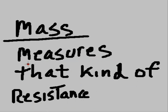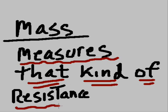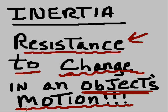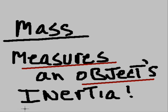While mass measures that kind of resistance — resistance to change in an object's motion. So mass measures an object's inertia.